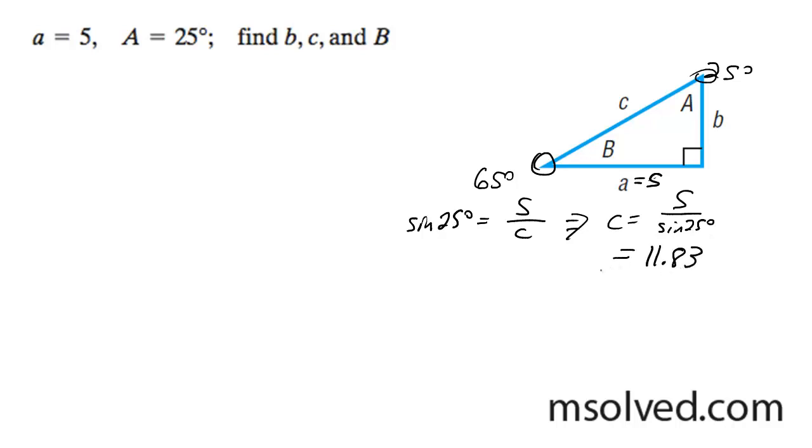Now for side B, I'm going to do sine of 65 degrees is equal to B over 11.83. Finally I'm going to get B is equal to 11.83 times the sine of 65.